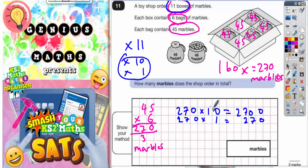So if you add together your 10 lots plus your 1 lot, you're going to get 11 lots of 270. So if we're adding them together, we need to add these two answers together. So 2,700 add 270.